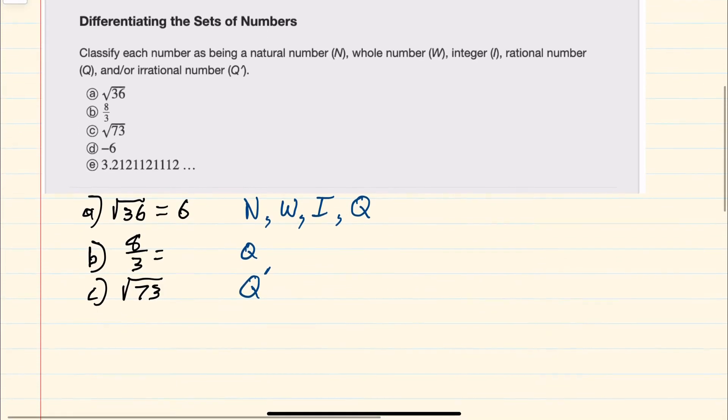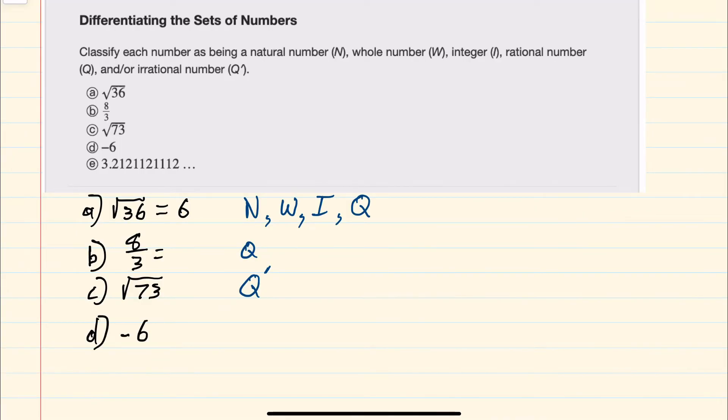Moving on to d. D is negative six. Negative six is not natural, because it's not in the sequence one, two, three, four, five, and so on. It's not a whole number. However, it is an integer. And since we could write negative six as negative six over one, it's also rational.